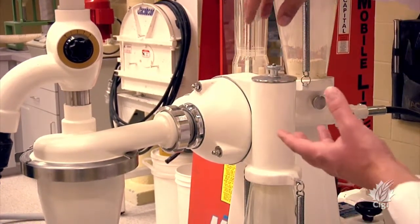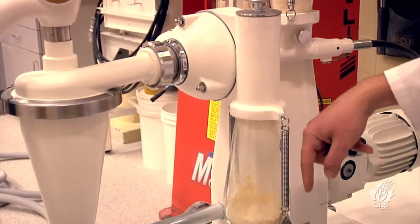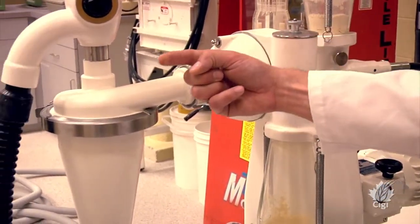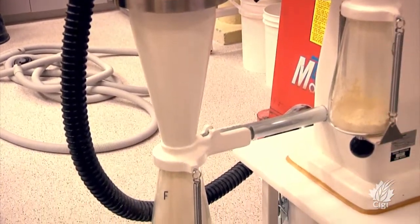The particles get separated in here. The coarse fraction comes through here, which would be the starch fraction. The fine fraction keeps on going and is deposited in this container here, and this would be the protein fraction.